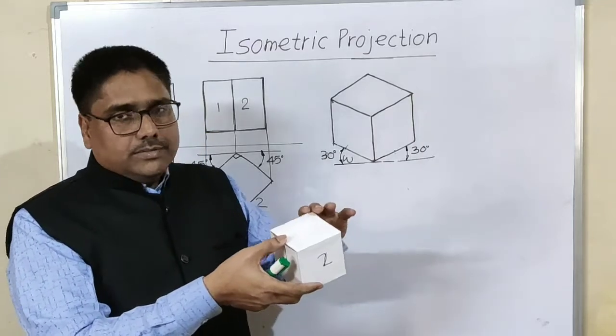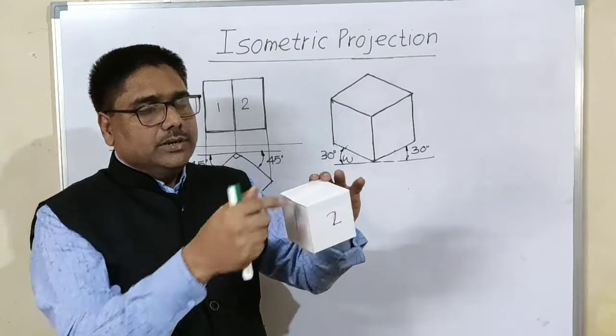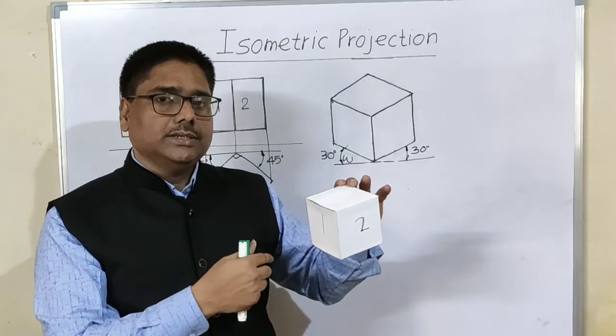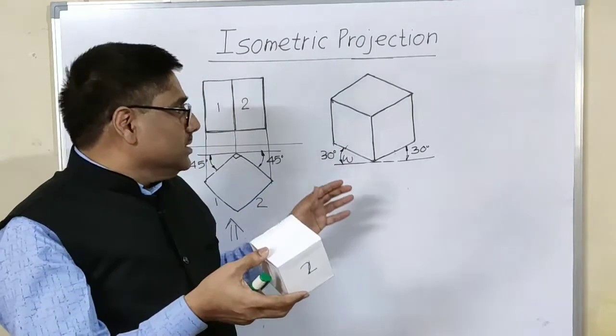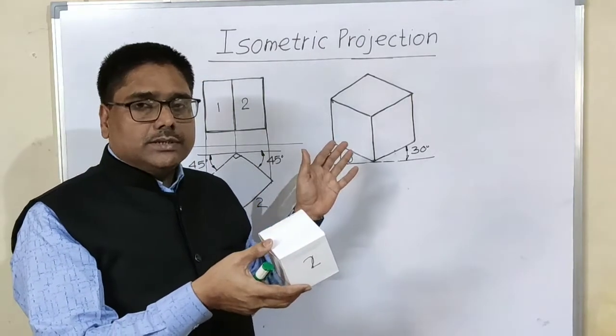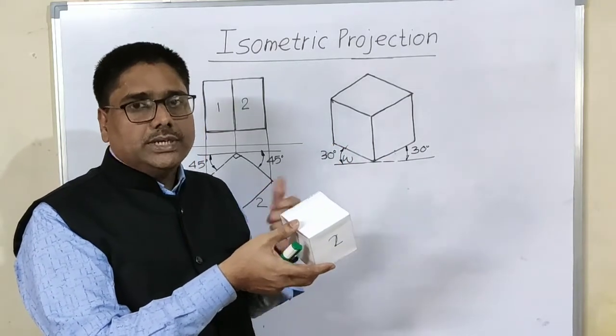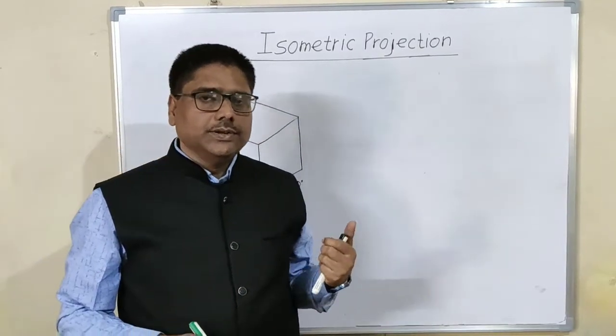Because of two modifications, each and every dimension will become oblique, that is it will be inclined to both the planes, that is HP as well as VP. Because of this, there will be reduction in the projected view of each dimension. Hence, each and every dimension is reduced by some extent.